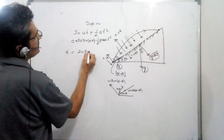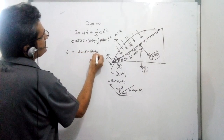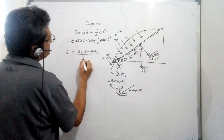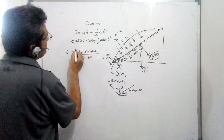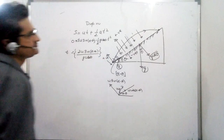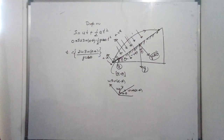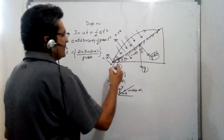Substituting into s = ut - ½at² with s = 0 and a = G cos theta, we solve to get the time of flight: T = 2U sin(alpha minus theta) / (G cos theta).